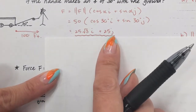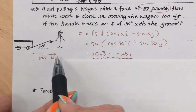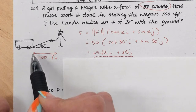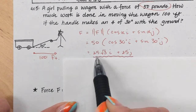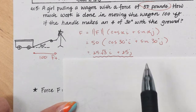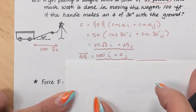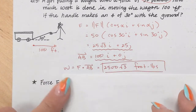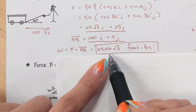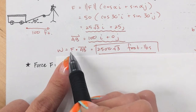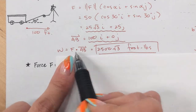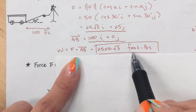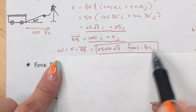Your distance vector goes from here to here — 100 feet to the right. So that would be 100i plus 0j. Then I literally take the dot product of the force vector and the distance vector. When you multiply force in pounds by distance in feet, the unit is foot-pounds. If you were going to the left, your distance vector would be negative 100i instead.